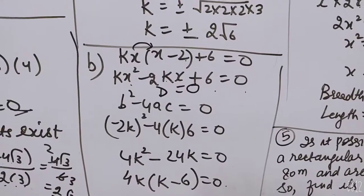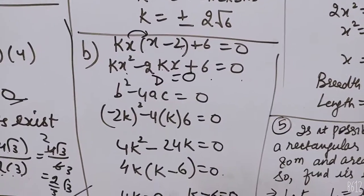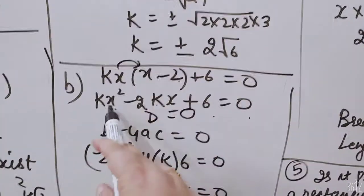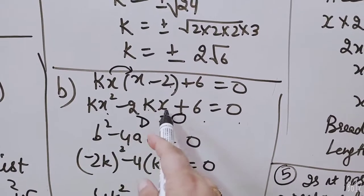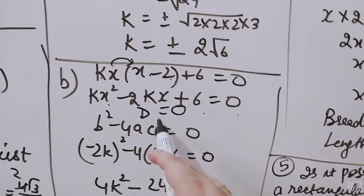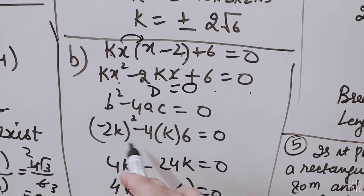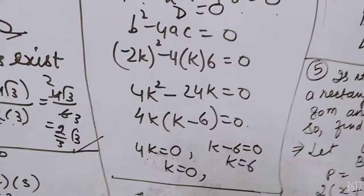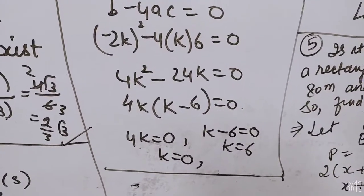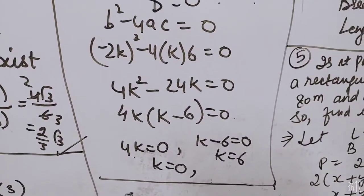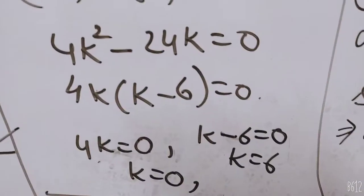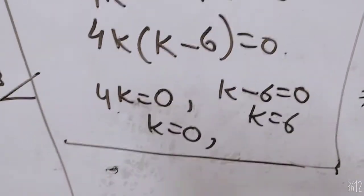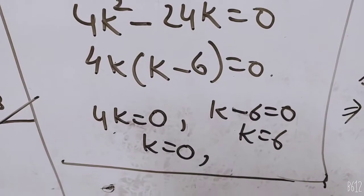Next question, kx(x minus 2) plus 6 is equal to 0. Opening bracket, kx times x is kx squared, kx times minus 2 is minus 2kx plus 6. b squared minus 4ac equals 0. Minus 2k squared minus 4k times 6 equals 0. Solve.